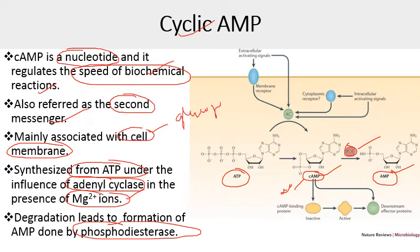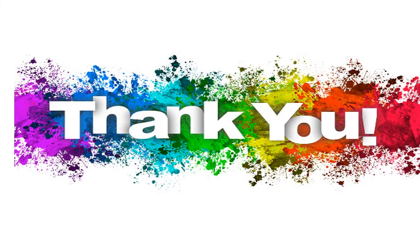Cyclic AMP also helps in lipolysis — the breakdown of lipids in adipose tissue — and it acts as a hunger signal in bacteria. It also helps in controlling and initiating transcription by forming a complex with CAP, the catabolite activator protein. The cyclic AMP–CAP complex starts the initiation of transcription. This was all about the role of cyclic AMP and the tryptophan operon. If you have any questions or suggestions, please leave them in the comment section. Thanks for watching and have a great day.